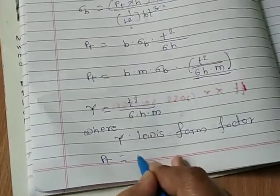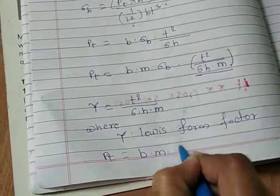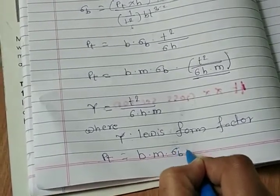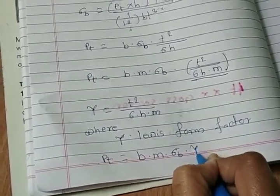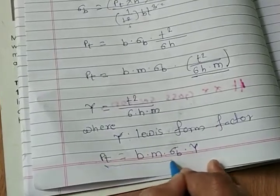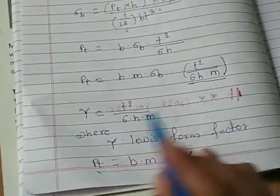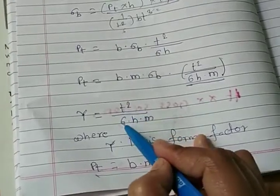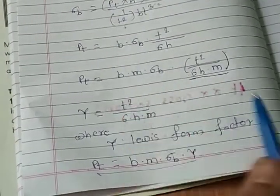So equation become, pt is equal to b m sigma b into capital Y. So Y is Lewis form factor and it is t square divided by 6 h m.